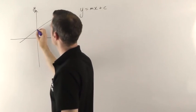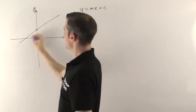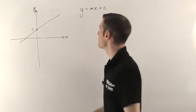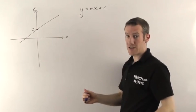So c is the point where the straight line crosses the y-axis. It's that value there—you just read it off the graph—and m is the gradient of the straight line.